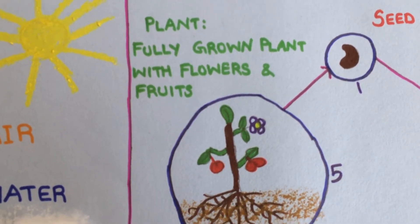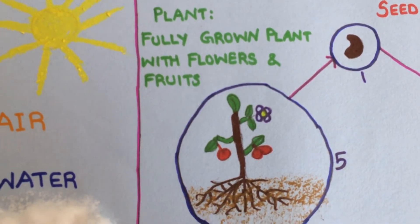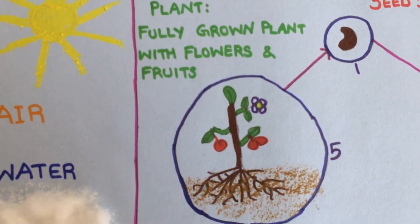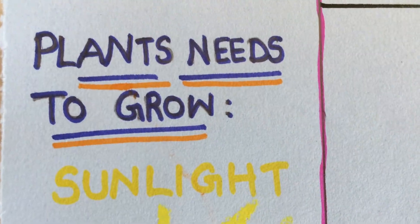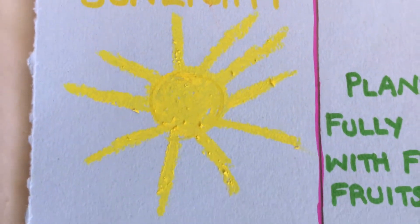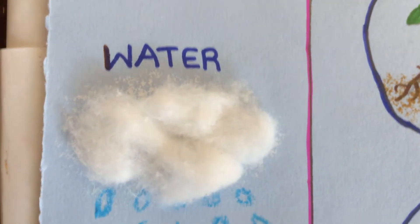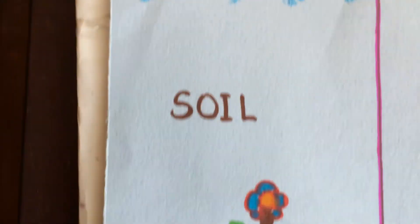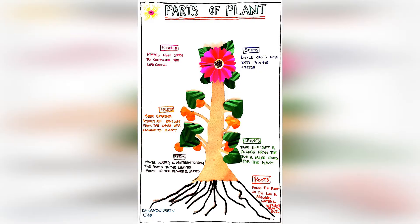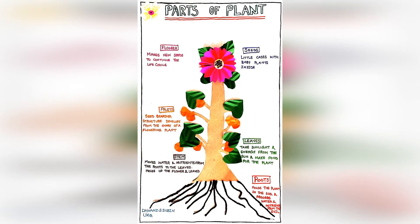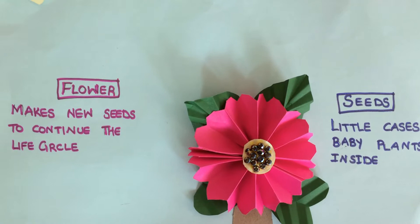A fully grown plant has flowers and fruits. Plants need sunlight, air, water, and soil to grow.